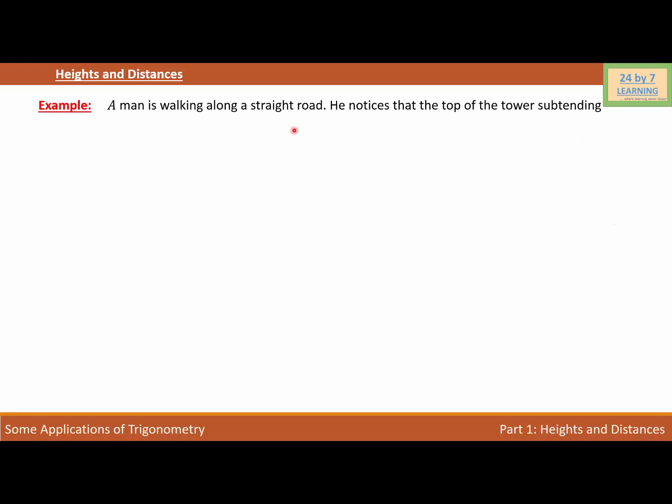Example: A man is walking along a straight road. He notices that the top of the tower subtending an angle of 60 degrees with the ground. If the height of the tower is 60 meters, then what is the distance of the man from the base of the tower?